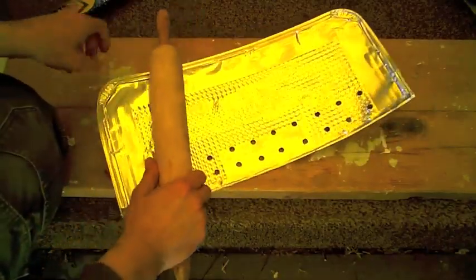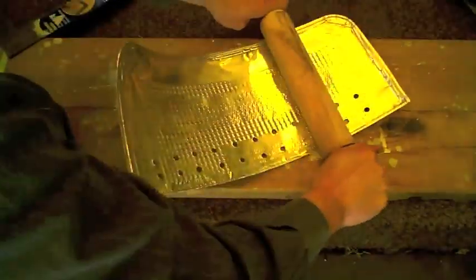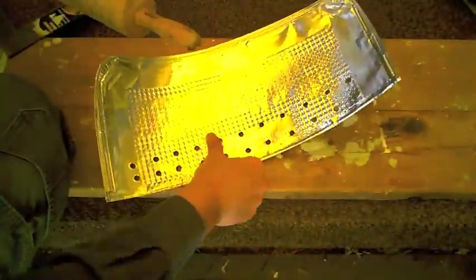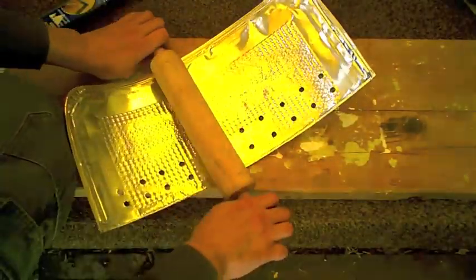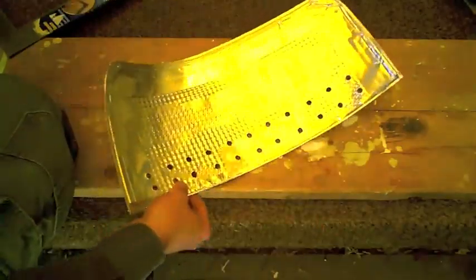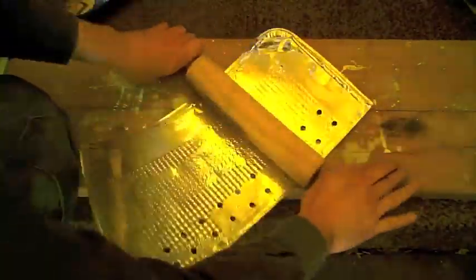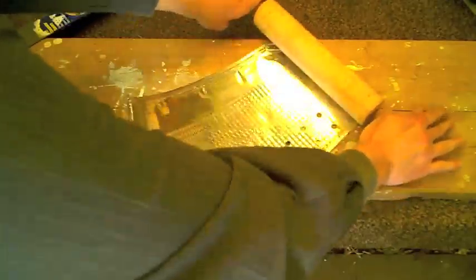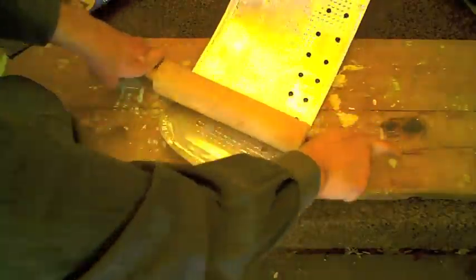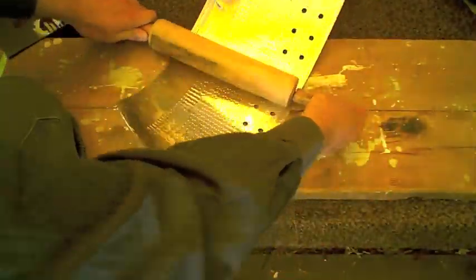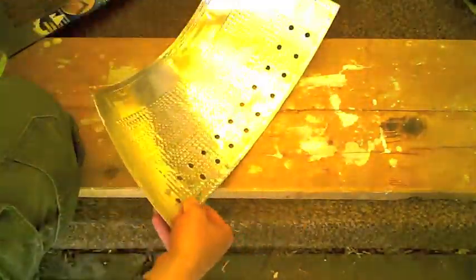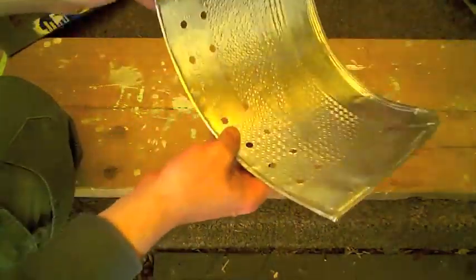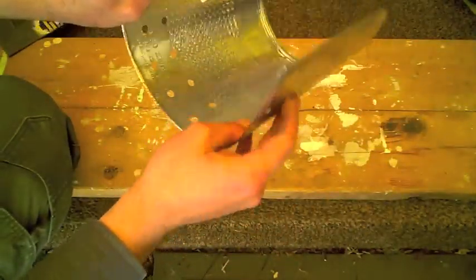Okay, so now for our last step we're just going to give it a final roll here. So what we're doing here is we're flattening any ugly little bits on the air inlet holes. I'm also starting to curve the thing a little bit more.